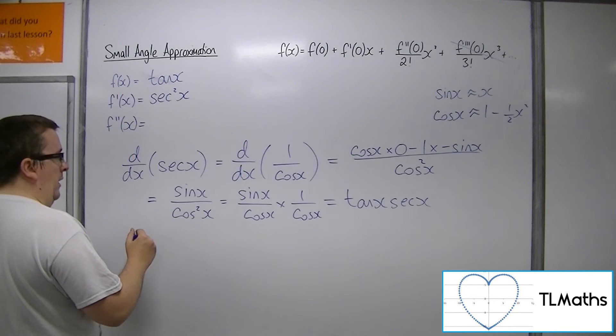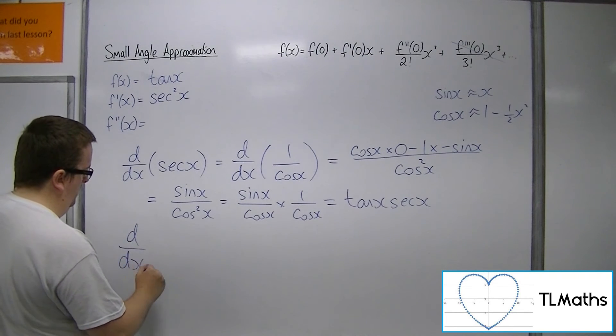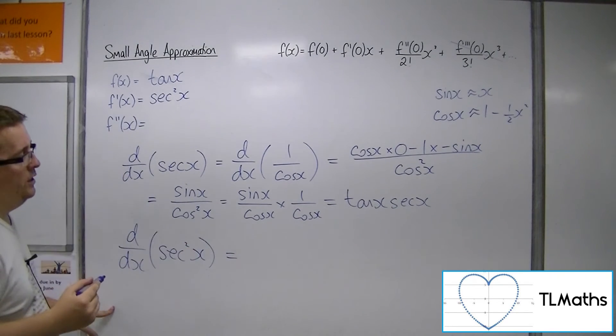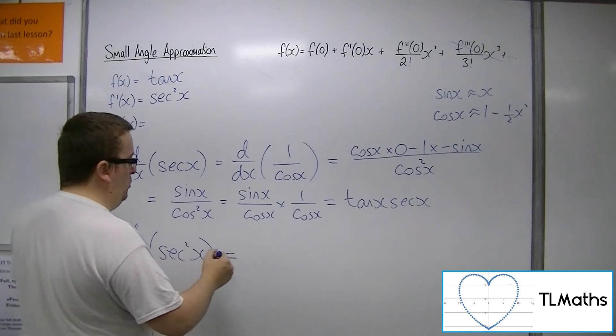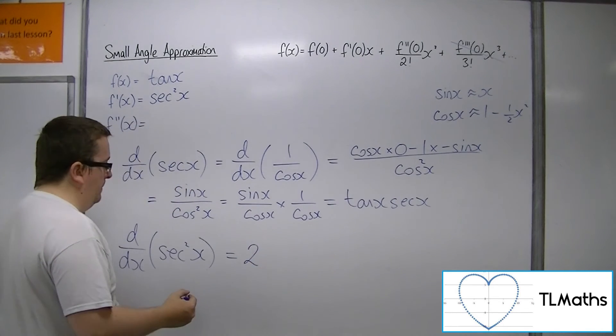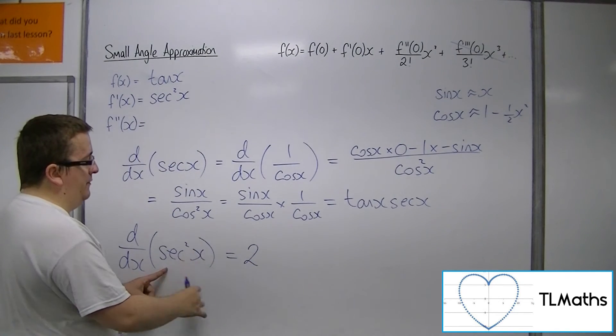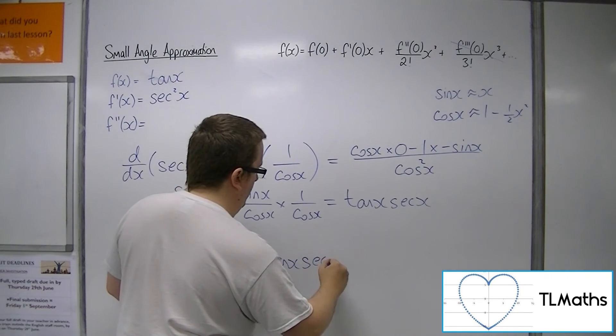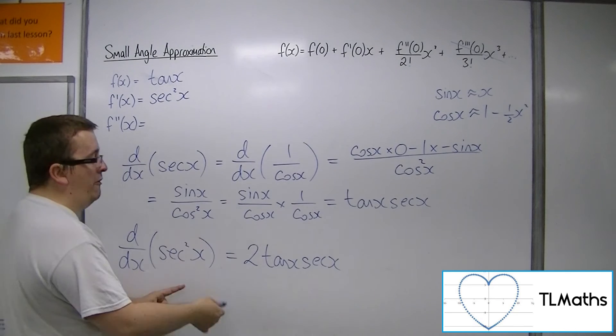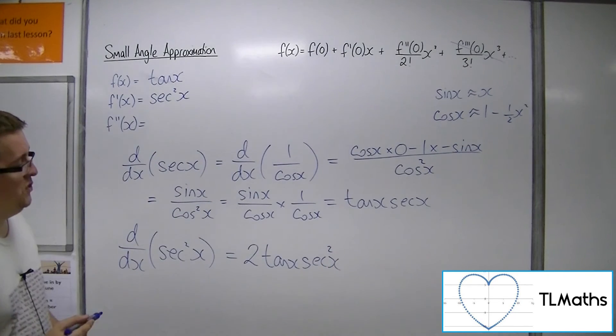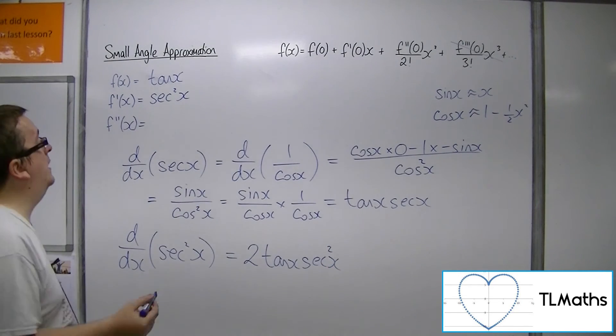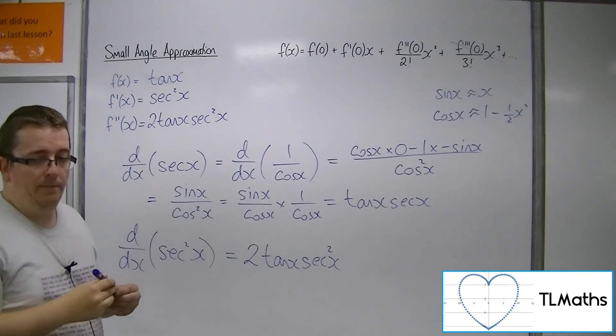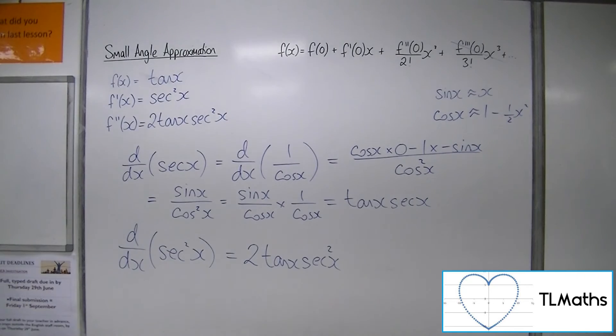So, if I've got the derivative of sec squared x, then using the chain rule, the 2 can come down to the front, multiplied with the derivative of sec x, which is tan x sec x, multiplied by sec x now to the power of 1. So, I'll get 2 tan x sec squared x. That's the derivative of sec squared.